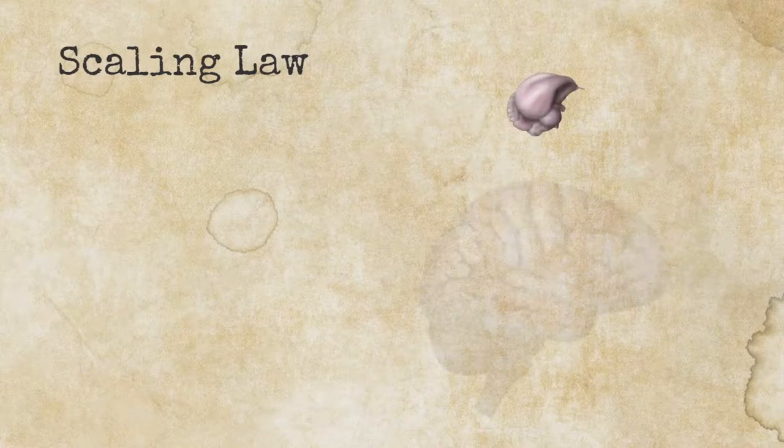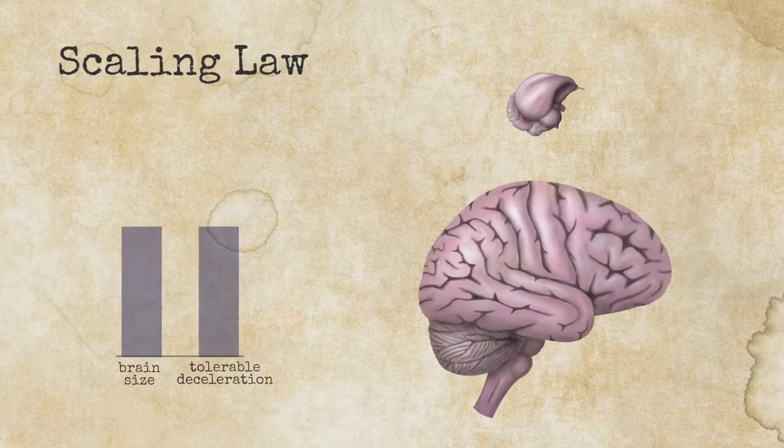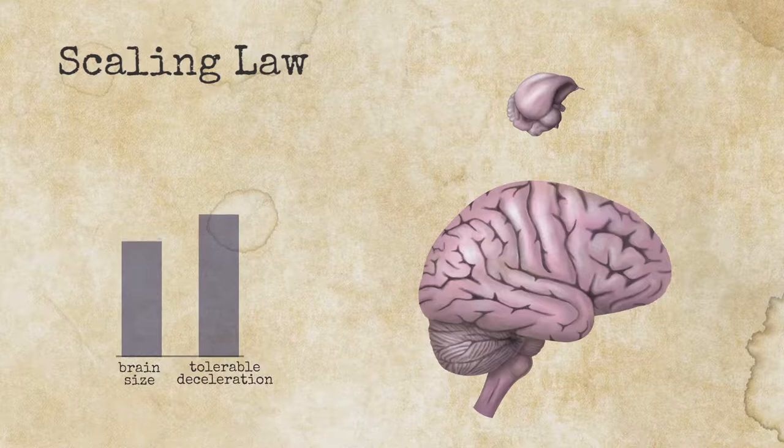The deceleration that the brain can withstand without injury depends on its size. This is an example of a scaling law. The size matters. The smaller the brain, the larger the deceleration that it can withstand.